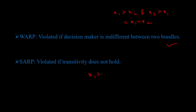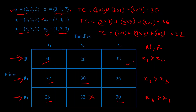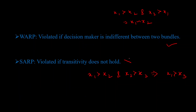To check SARP, we need transitivity: if X1 is preferred to X2 and X2 is preferred to X3, then we must also have X1 preferred to X3. In our case we have X1 preferred to X2 and X2 preferred to X3, so we should have X1 preferred to X3 — but actually we have X3 preferred to X1, not X1 preferred to X3. Transitivity is not holding, so this data set does violate SARP. For WARP, check for indifference; for SARP, check for transitivity.